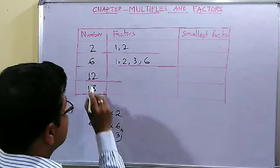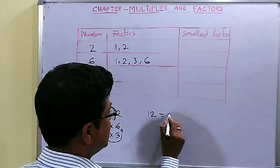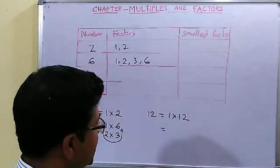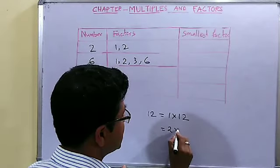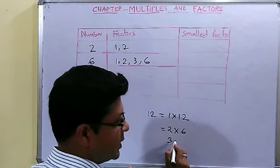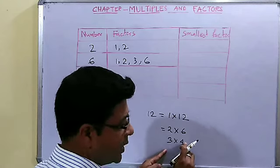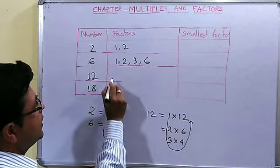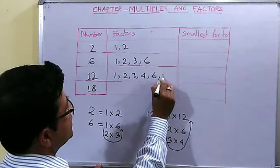Now let us come to 12. At first 1 into 12. After 1 the next number is 2. Is 2 into something equal to 12? Yes — 2 into 6. Next number is 3: 3 into 4. And 4 is already obtained here. So the factors of 12 are 1, 2, 3, 4, 6 and 12.